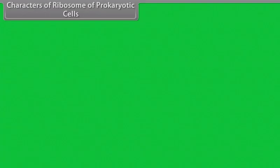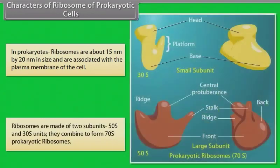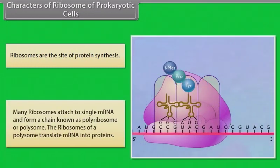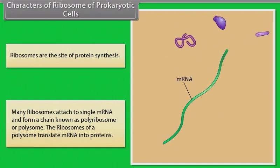Characters of ribosomes of prokaryotic cells: In prokaryotes, ribosomes are about 15 nm by 20 nm in size and are associated with the plasma membrane of the cell. Ribosomes are made up of two subunits — 50S and 30S — which combine to form 70S prokaryotic ribosomes. Ribosomes are the site of protein synthesis. Many ribosomes attach to a single mRNA to form a chain known as a polyribosome or polysome, which translates mRNA into proteins.